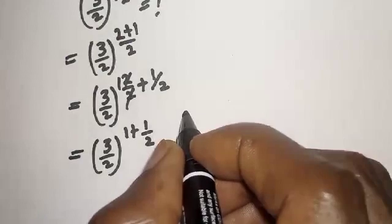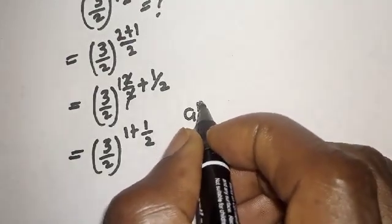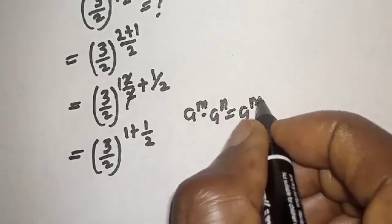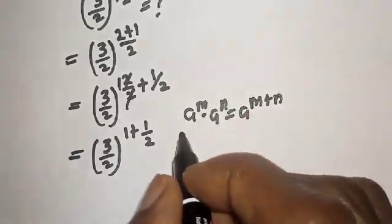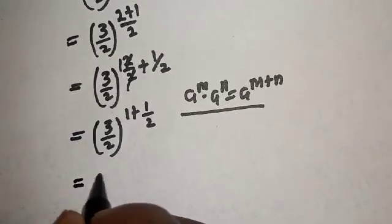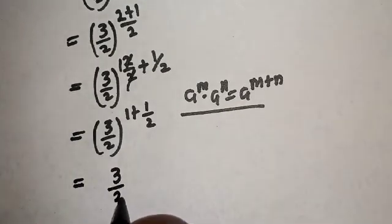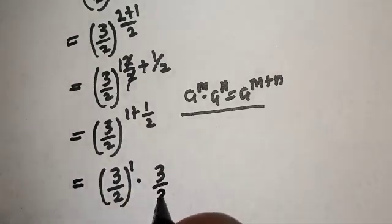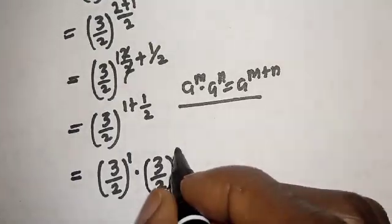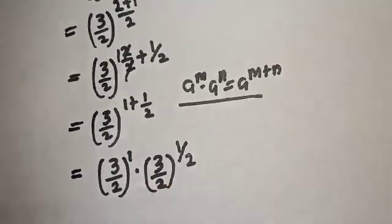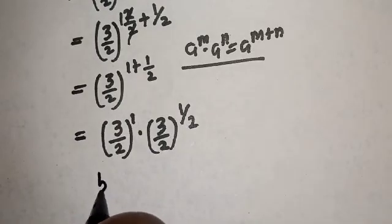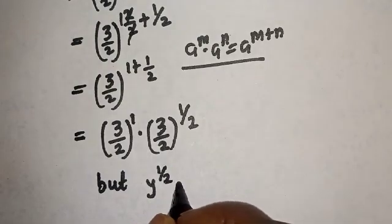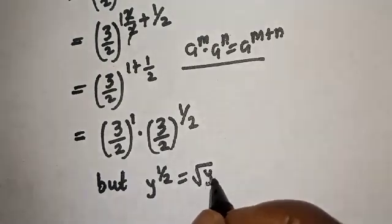Now take note of this exponential rule: a raised to power m multiplied by a raised to power n is equal to a raised to power m plus n. Applying this, we get three over two to the power of one, multiplied by three over two to the power of one over two. Note that y to the power of one over two is equal to the square root of y.